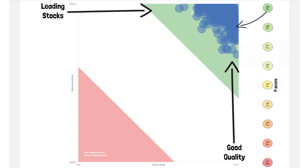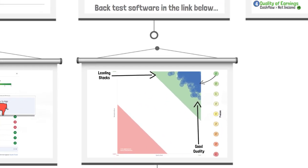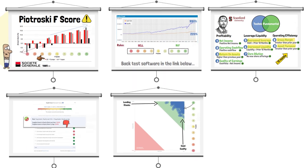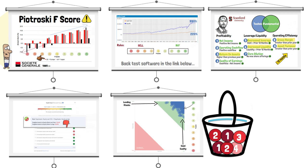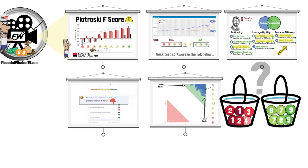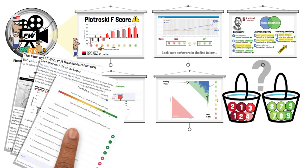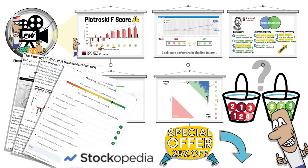It begs the question: if we can easily filter for this type of stock through a simple scoring system, why would we not incorporate it into any strategy? Which, in fact, is why I do. Simply put, if we had a basket of stocks scoring 1 to 4, which we know underperform, and a basket of stocks scoring 7 or above, which we know outperform, which basket would you include in your strategy? For those interested in digging further or perhaps screening for Piotroski F-score stocks, I recommend Stockopedia, and have managed to negotiate a 25% discount for all viewers clicking the link below.